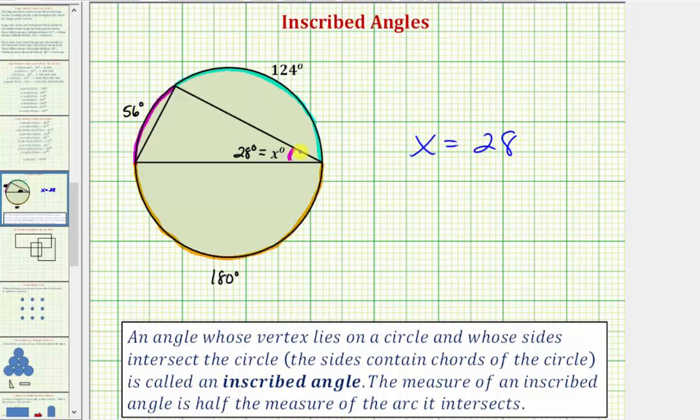While we're here, let's also find the measure of the other two angles in the triangle. Notice how this angle intersects the arc measuring 124 degrees. And therefore the measure of this angle is half of 124 degrees or 62 degrees.